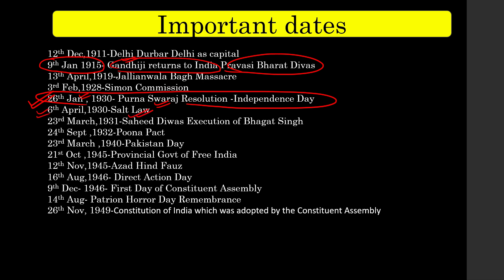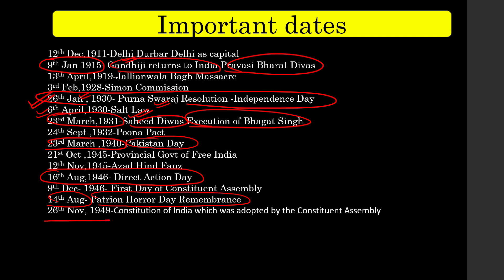A probable question: why is 26th January significant — because of the Purna Swaraj Declaration. 6th April — because of Gandhiji breaking the Salt Law. Shaheed Divas: 23rd March 1931 — execution of freedom fighter Bhagat Singh. 23rd March 1940 — Pakistan Resolution Day. 16th August 1946 — Direct Action Day. 14th August — Partition Horrors Remembrance Day. 26th November — Constitution Adoption Day. I have prepared this list — please go through it.